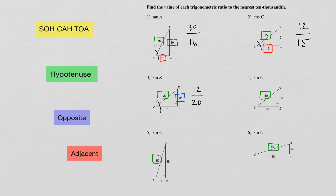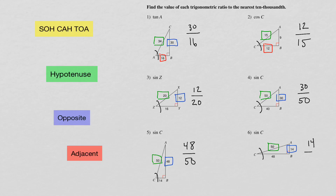Number four, sine of C. Here's angle C. Sine is opposite over hypotenuse. Here's your opposite side, so for sine of C we get 30 over 50. Number five, sine of C — here's angle C, sine is opposite over hypotenuse, here's your opposite side, so we get 48 over 50. Sine of C is 48 over 50. Number six, last one: here's angle C. Sine is opposite over hypotenuse, here's your opposite side, so we get 14 over 50.